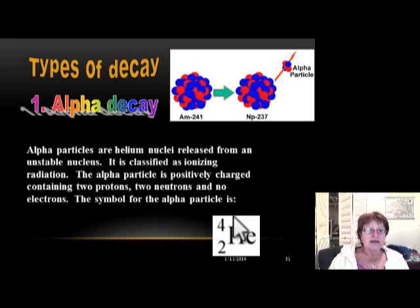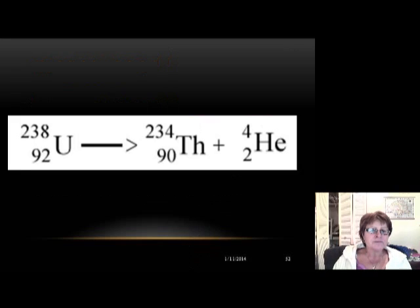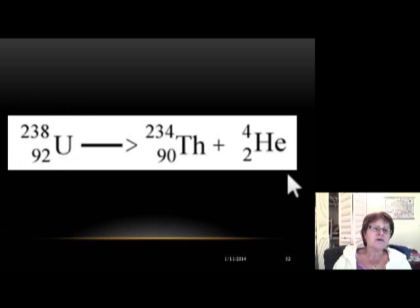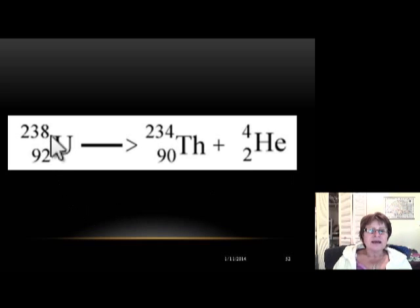When the alpha particle comes out of the nucleus, we can write what's called a nuclear equation. Let's see an example: uranium-238 decaying by alpha particle emission. This is really simple because the equation tells you immediately if you did it right or wrong.